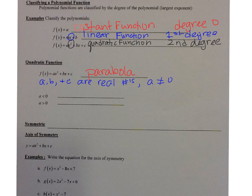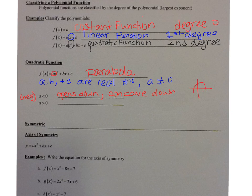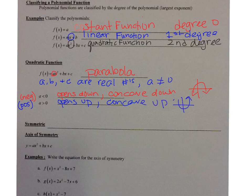If a — the number in front of your x² — is less than zero, meaning it's negative, the parabola opens down. If your a is positive, greater than zero, then it's concave up, so it opens up. And it is symmetric with respect to the x-axis.